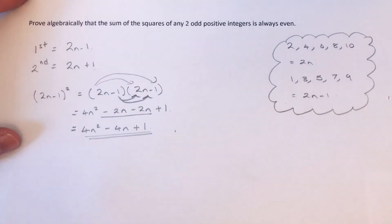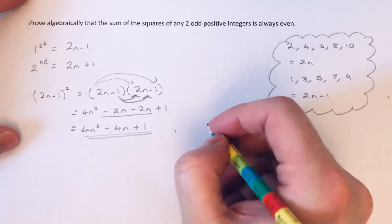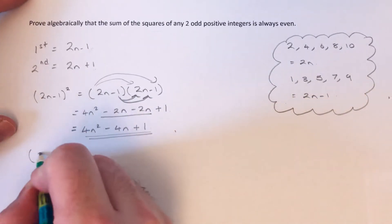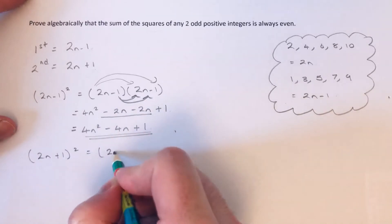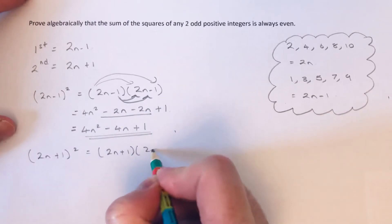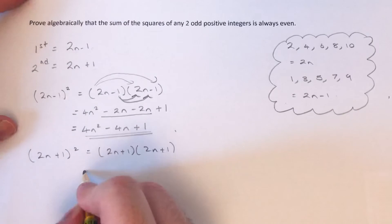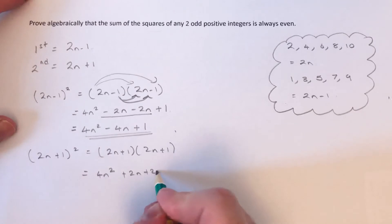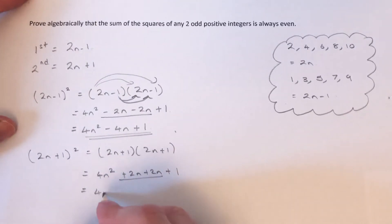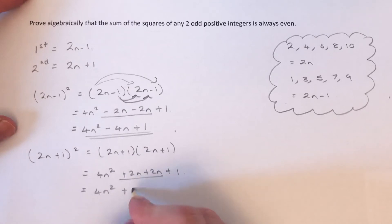So for my second odd integer, I've got to do the same. So I've got to square it. Let me work out 2n plus 1 squared. That will give us 4n squared plus 2n plus 2n plus 1. So again, simplify the middle terms. We get 4n squared plus 4n plus 1.